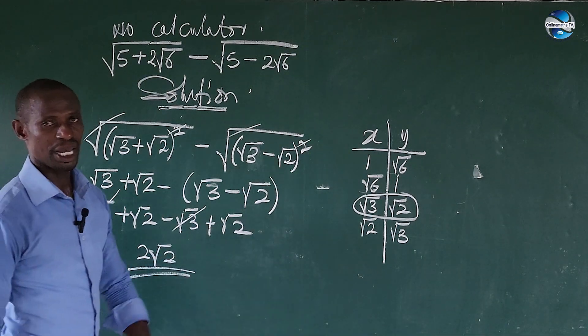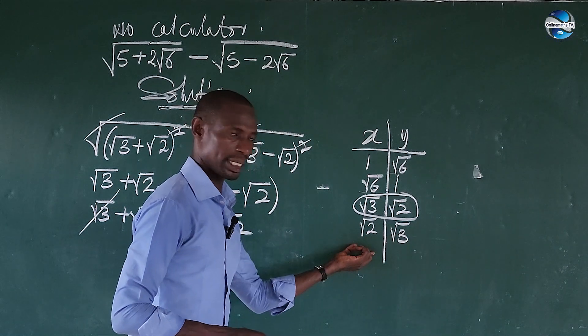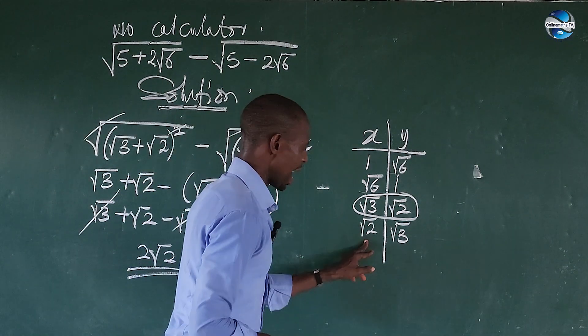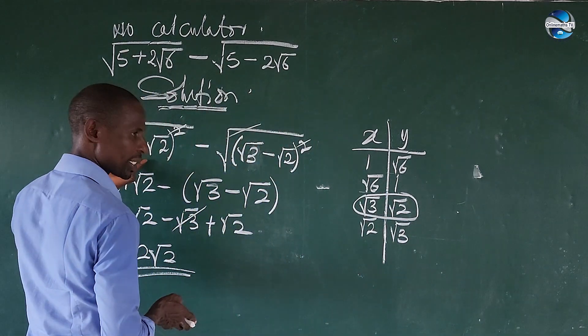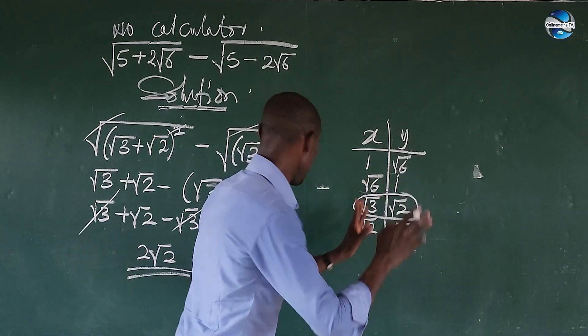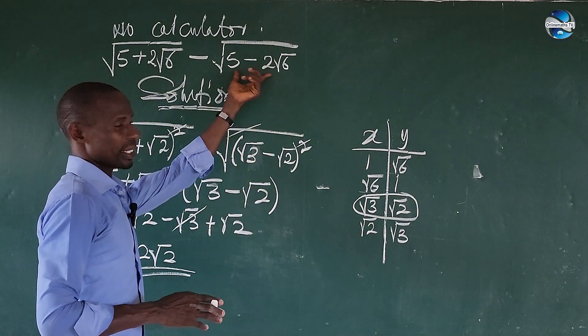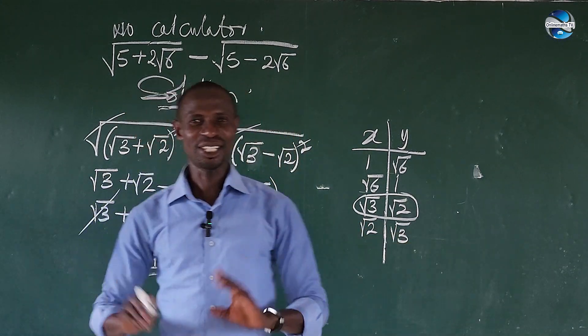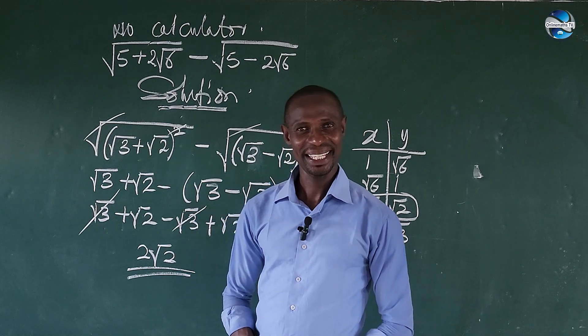Now again if you try your hand on this it will still give us the same answer. If you add this and this square it, it will give you this, then if you subtract this from this and square it, it will give you this. So if you do that from this you also get the same answer. This is all I have for you today, a brief thanks for being there, bye for now.